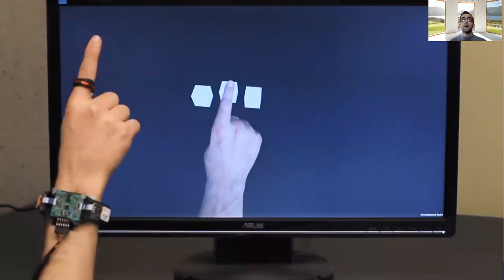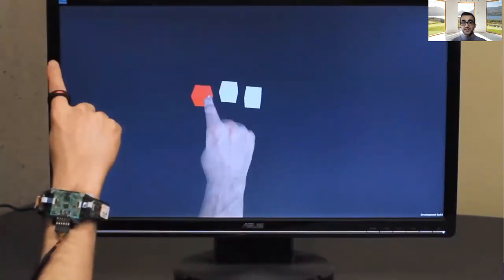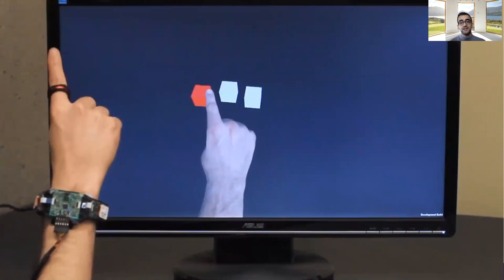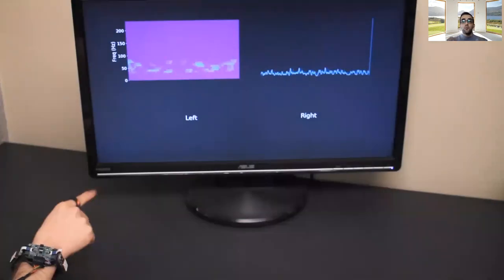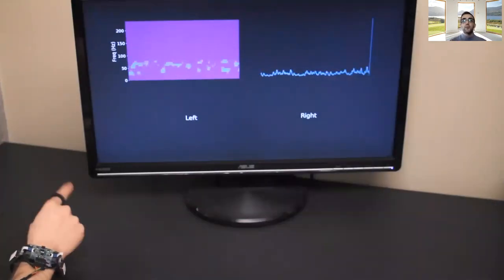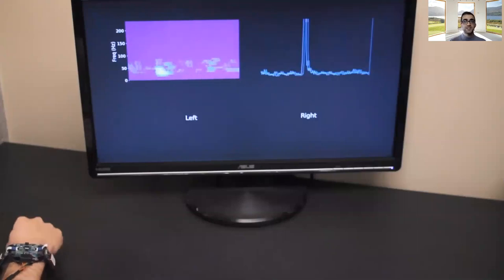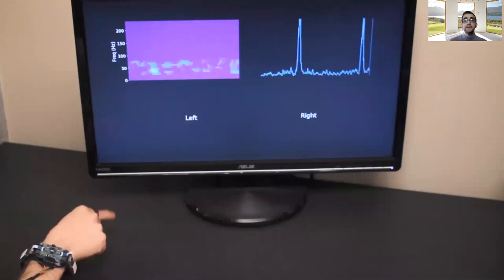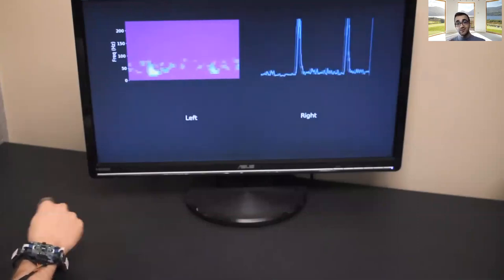Our ring can also enable interactions with virtual objects. One interesting aspect about our ring is that due to its high bandwidth, we can measure events such as taps or flicks, which are immediately distinguishable due to their broadband spectrogram and higher energy.